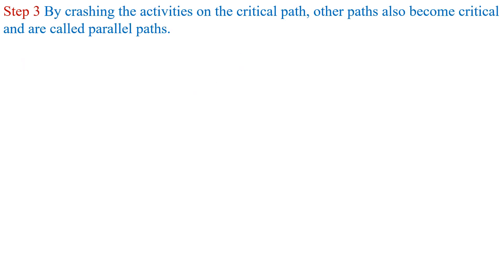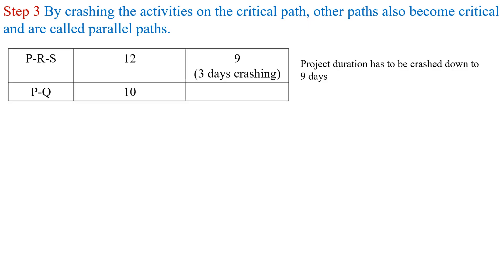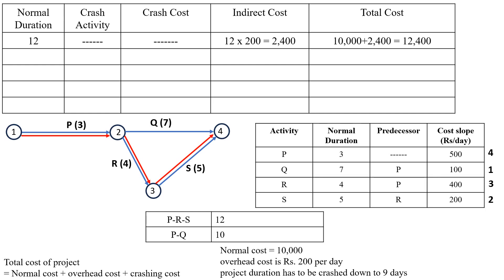By crashing the activities on the critical path, other paths may also become critical and are called parallel paths. Here, two paths are available: path P-R-S with duration 12 days, and path P-Q with duration 10 days. We have to crash down to 9 days, which means we need to do crashing for 3 days total. Let us start the crashing.